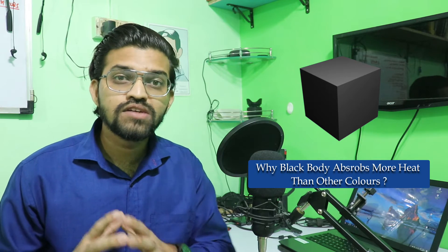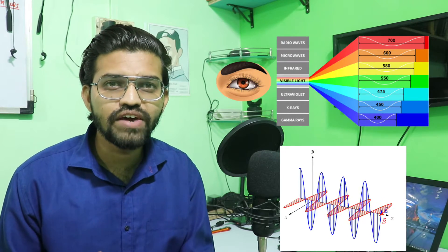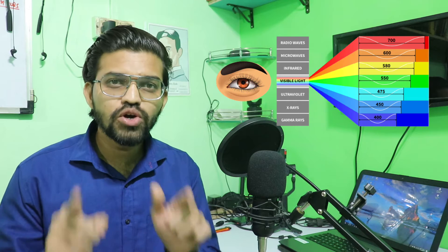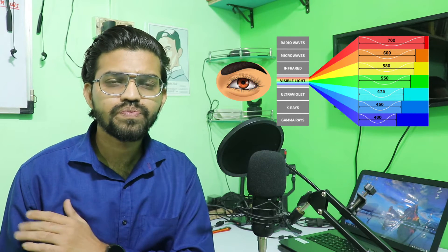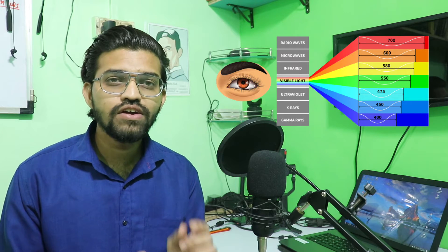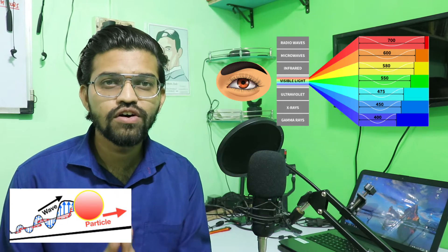For example, in summer season your parents advise you to wear white clothes, because in white clothes you won't feel as sweaty as in black. Why is that so? Light is nothing but an electromagnetic wave — a bunch of photons that carry some amount of energy. The visible light spectrum has different colors, and each color has a different wavelength with different photons associated with it.